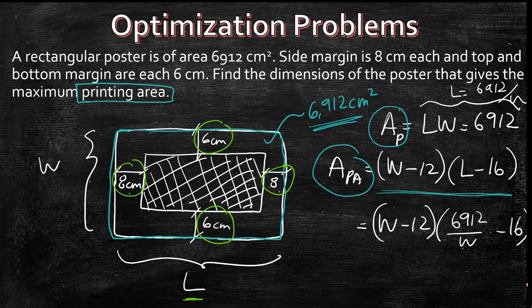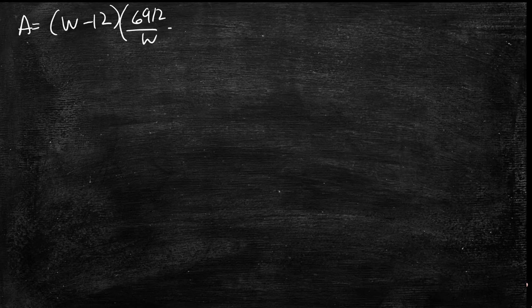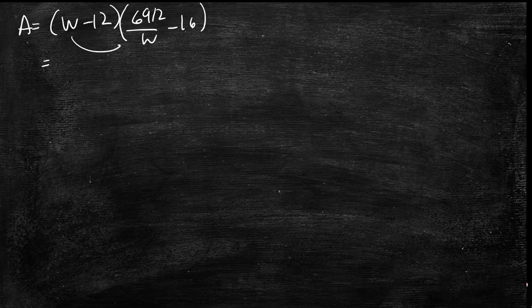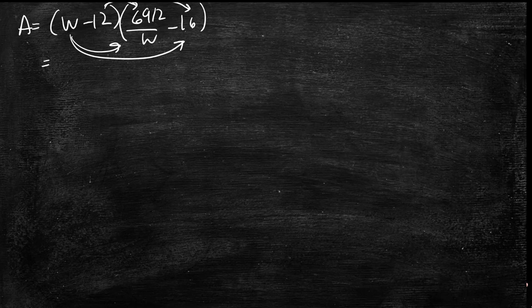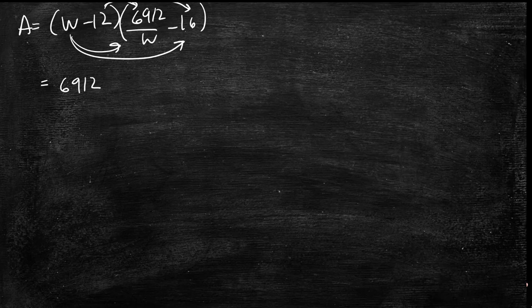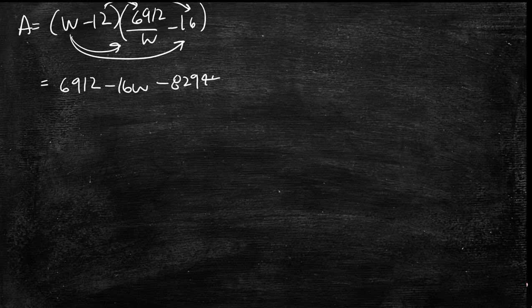So let's work on this together. Let's expand this. So if you have area equals W minus 12 into 6912 over W minus 16. So I'm going to just remember how you expand everything. I'm just going to do it very quickly. So you're going to be left with 6912 minus 16W minus 82944W^-1 plus 192.